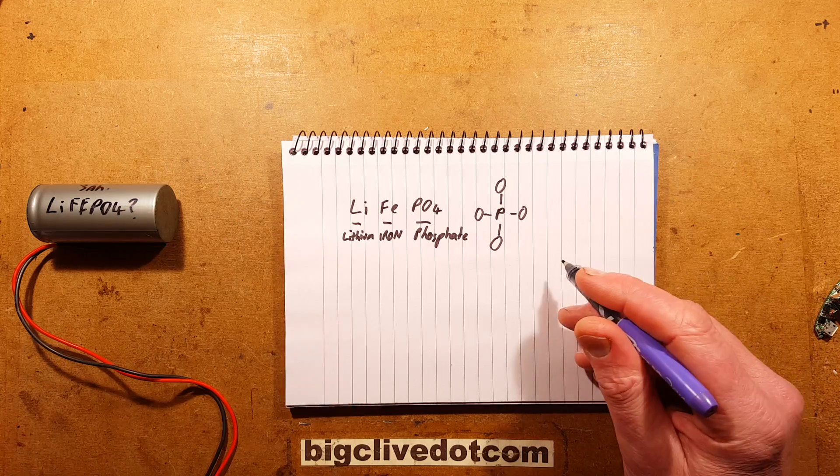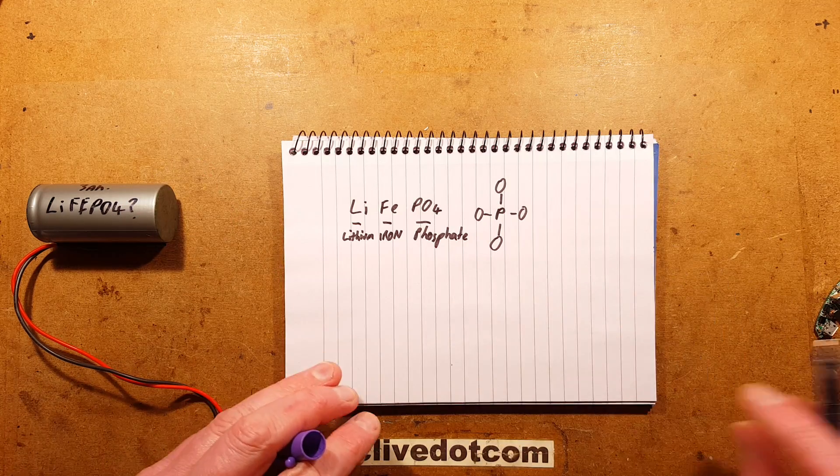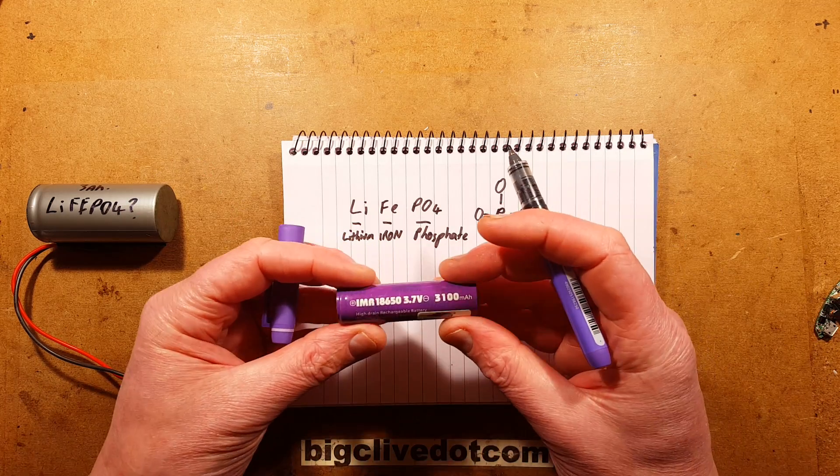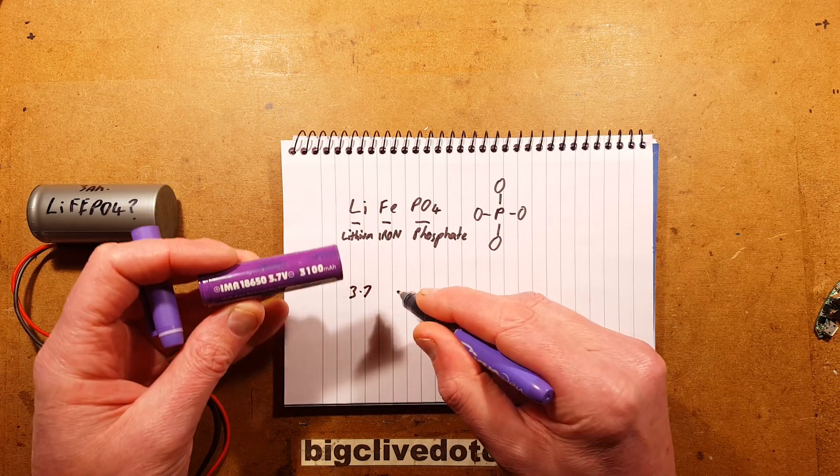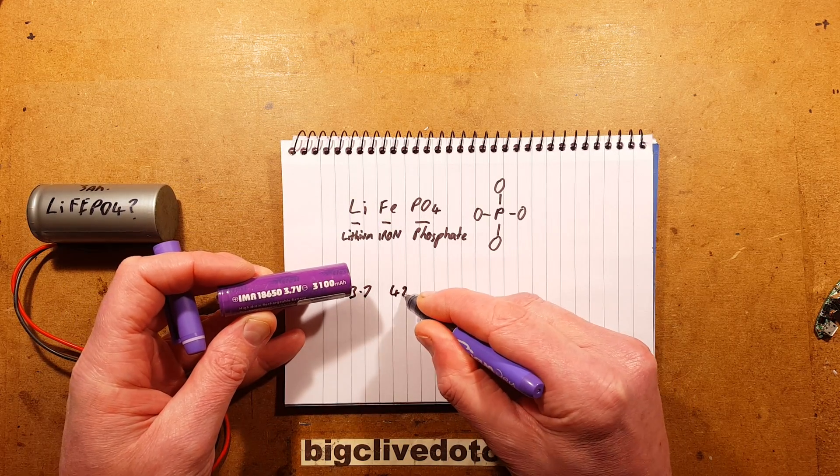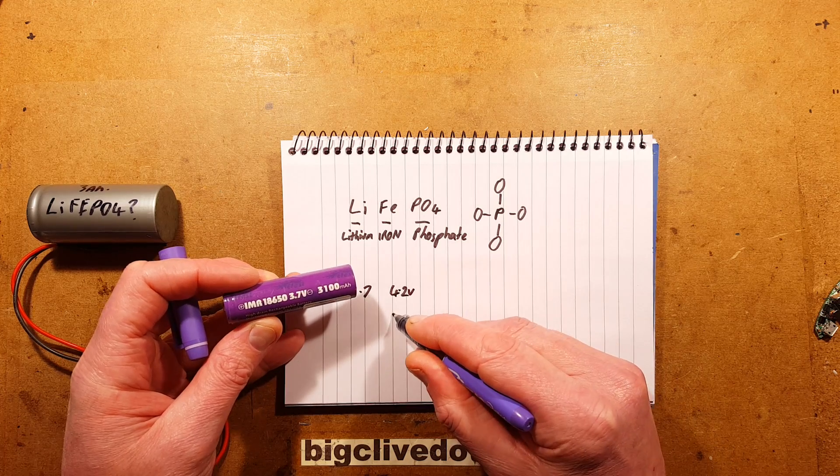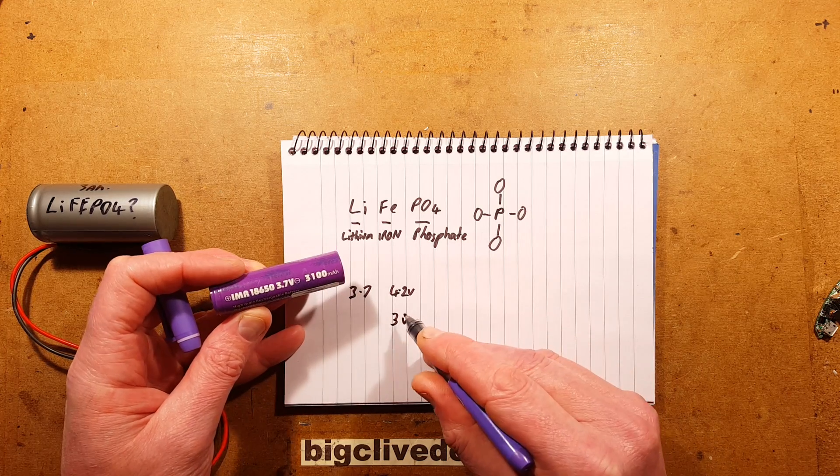And the notable thing is that whereas this lithium cell here, the ones we're used to, typically says about 3.7 volts, and it will actually go from 4.2 volts at the top of charge down to about 3 volts when it's almost depleted.